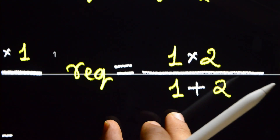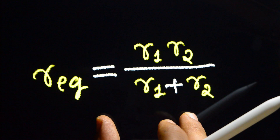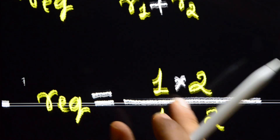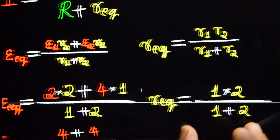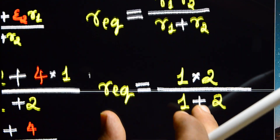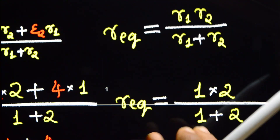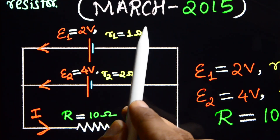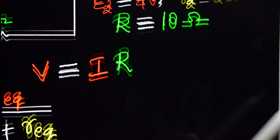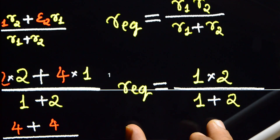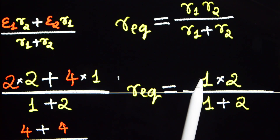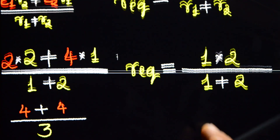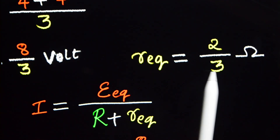R equivalent is equal to R1 into R2 divided by R1 plus R2. Substituting R1 equal to 1 and R2 equal to 2: R equivalent equals 1 into 2 divided by 1 plus 2, which gives 2 by 3 ohm.